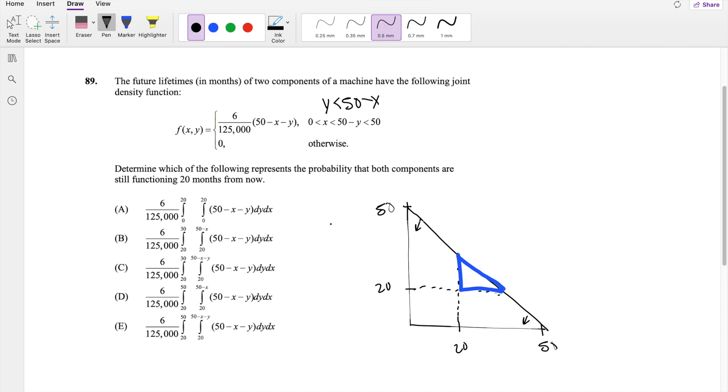So all these are dy dx, dy dx, so we're going dy first, going this way. If we're going this way, the top is going to be bounded by y is less than 50 minus x. So this is the line 50 minus x. And the lower bound here is going to be 20 for dy.